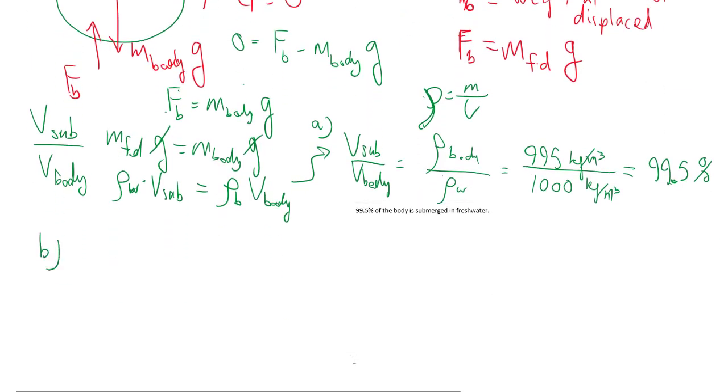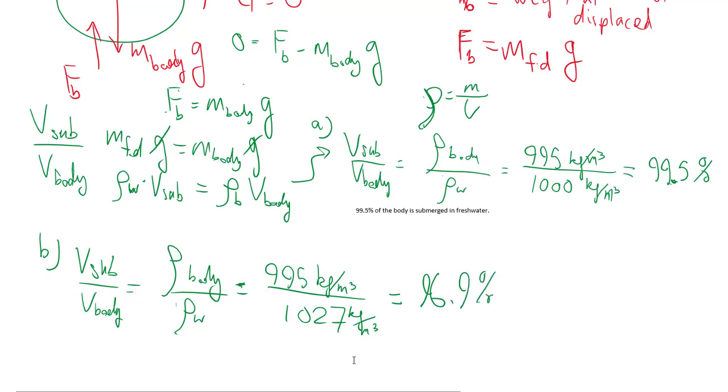Part b is exactly similar, so we can go to the end right away. But saltwater is a little more dense than water, giving us 96.9% instead. So that's why you have more of your body out of the water—it's easier to maintain and float and breathe in saltwater.